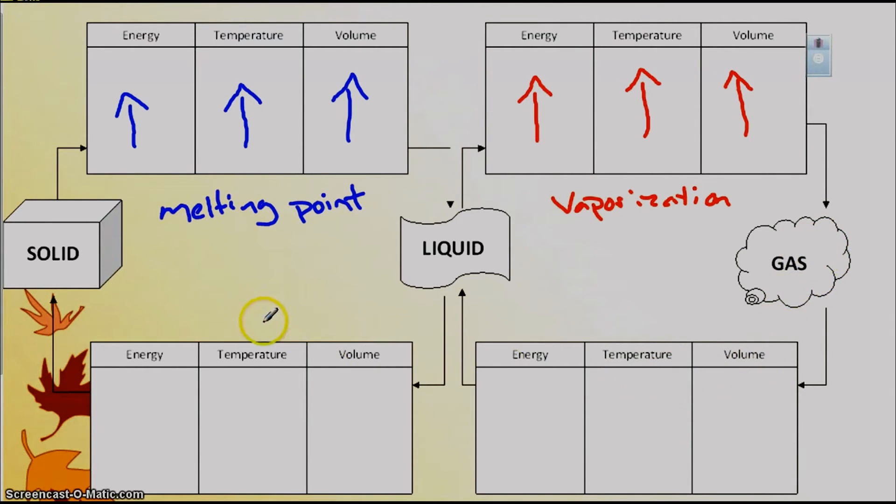So then, in the reverse, gas can become a liquid. And when that happens, the particles get closer together and volume is decreasing. Volume is going down because the particles are getting closer together. They're not as loose as they were as a gas. So they're becoming closer together and that means that temperature is decreasing.